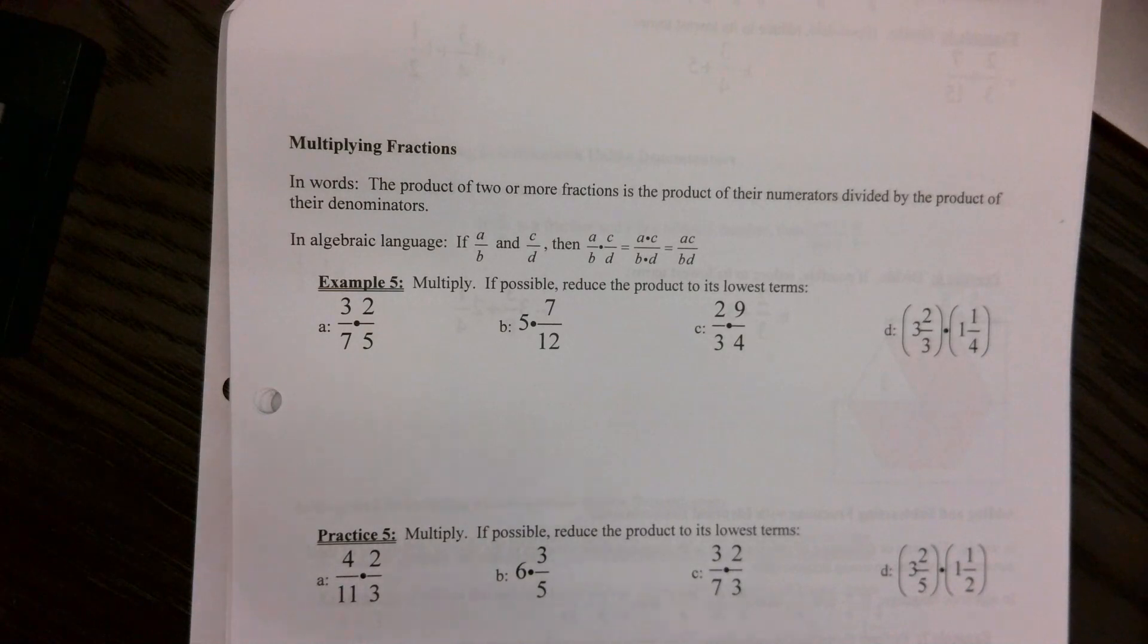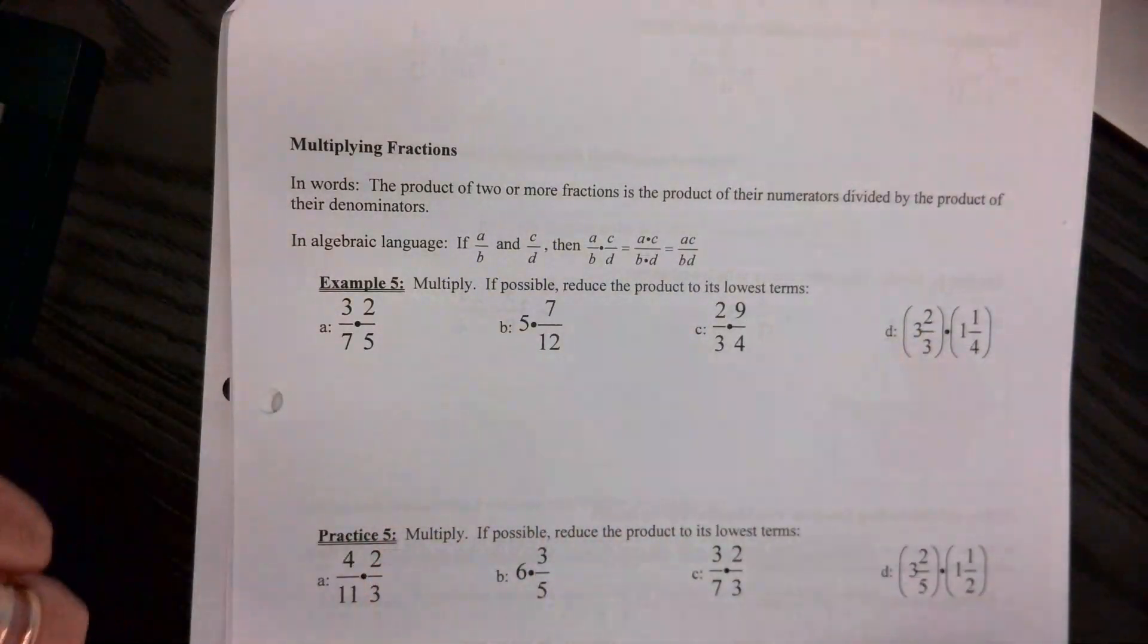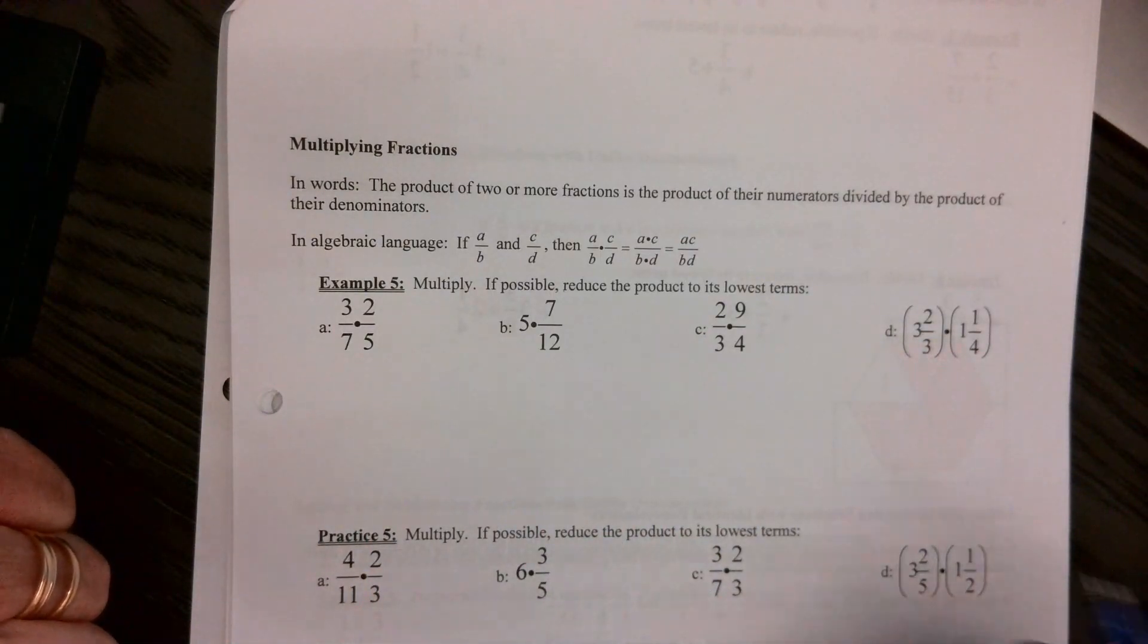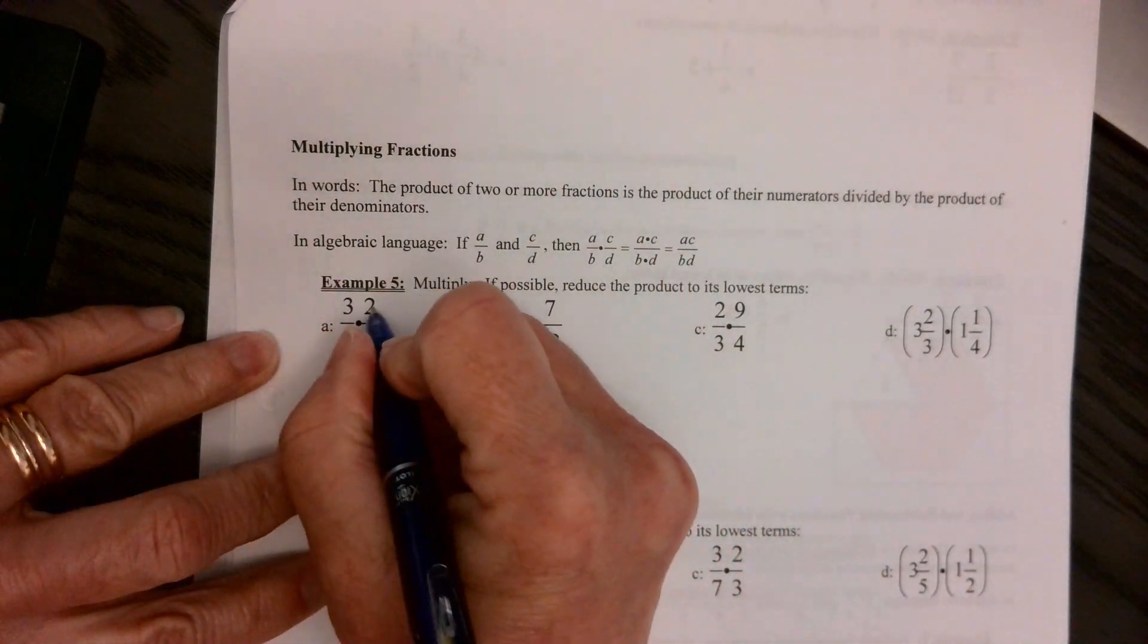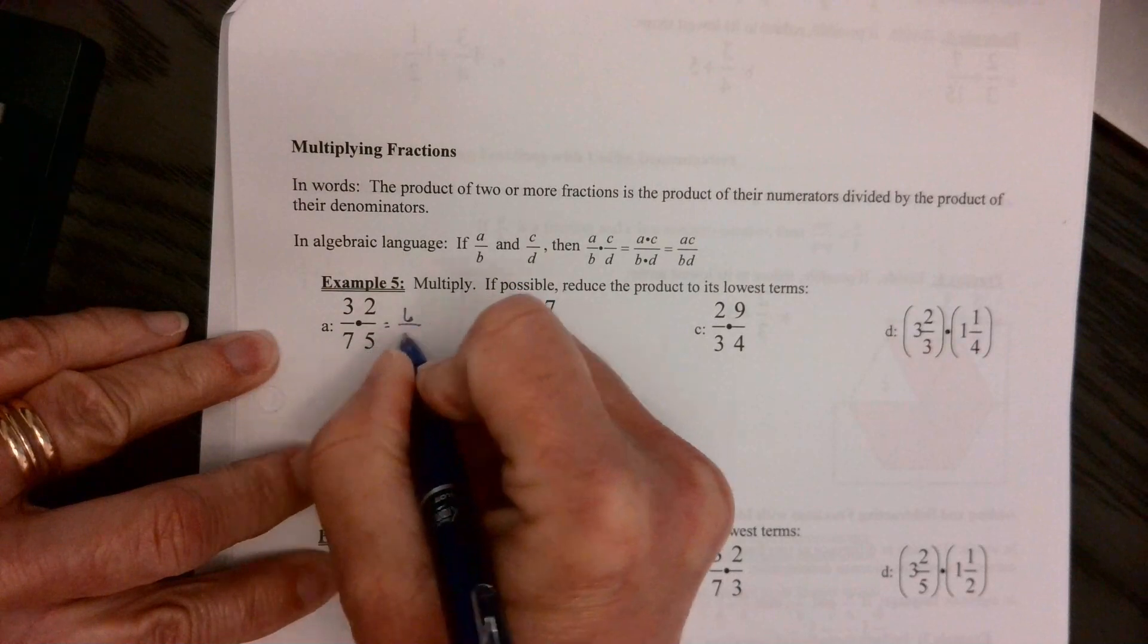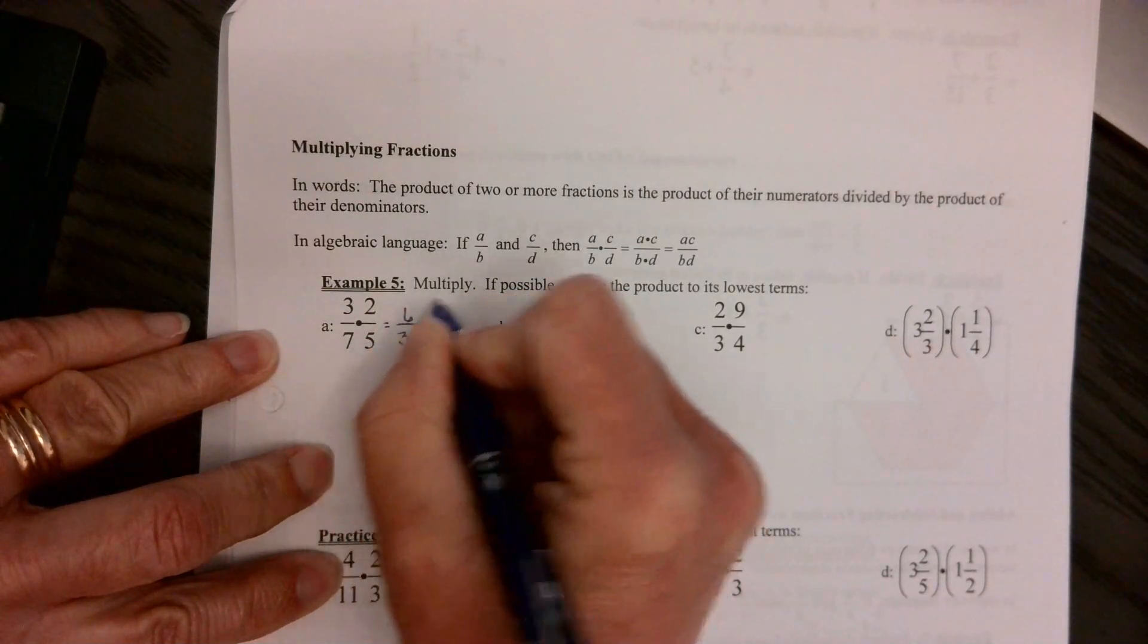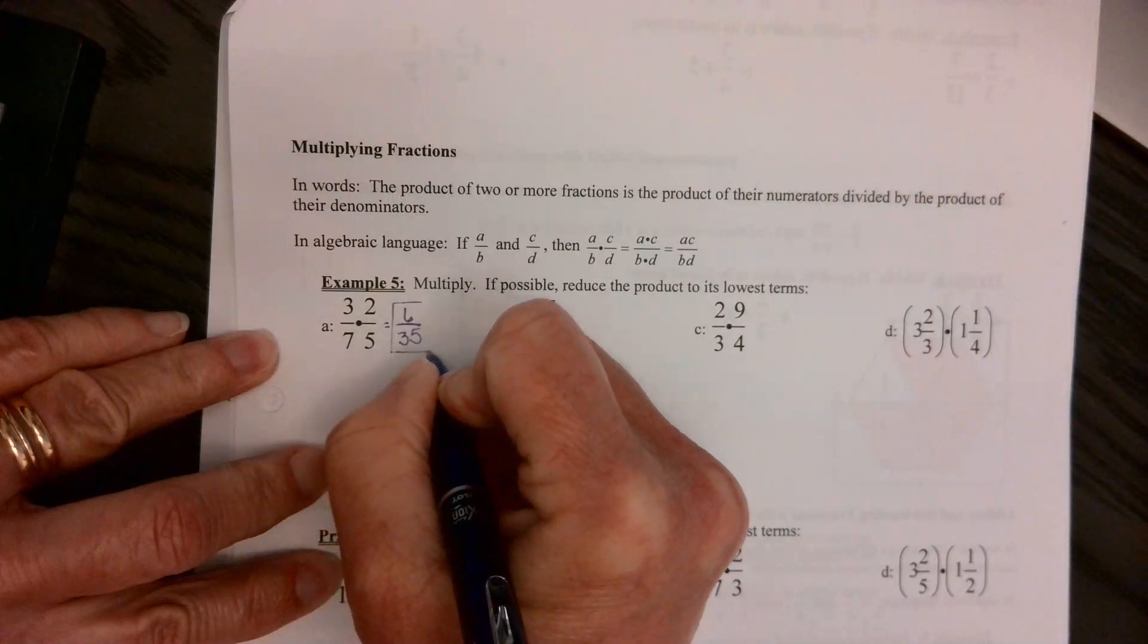You've been able to do everything up until this point. Even now, you're going to be able to do this. This is not hard. To multiply, what you do, there's two ways to do these problems. You can multiply straight across, then reduce, like this. 3 times 2 is 6, and 7 times 5 is 35. That will not reduce, so we're done.